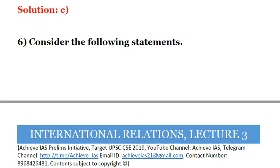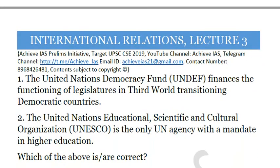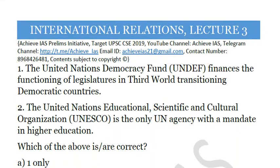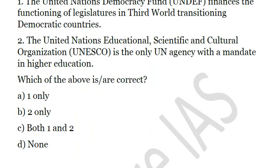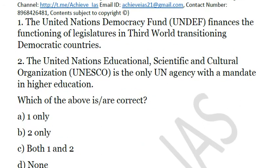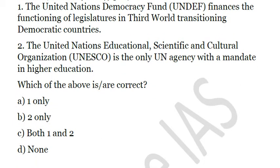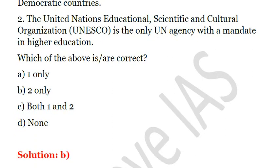The next question: Consider the following statements. First, the United Nations Democracy Fund finances the functioning of legislatures in third world transitioning democratic countries. Second, UNESCO is the only UN agency with a mandate in higher education. Only one statement is correct and that is the second — UNESCO is the only UN agency with a mandate in higher education. So the answer is B.